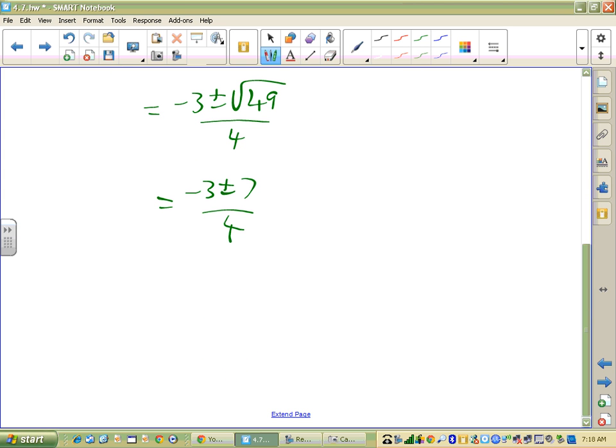So again, I have to actually simplify this. Negative 3 minus 7 all over 4 ends up being negative 10 over 4, which is negative 5 halves. That's one of my solutions, negative 5 halves.